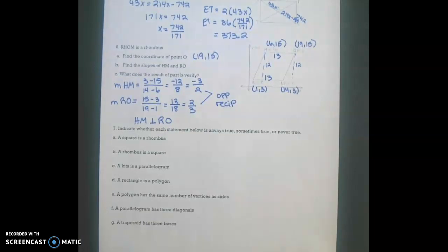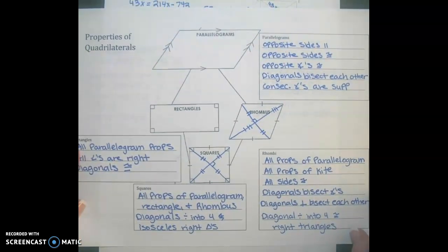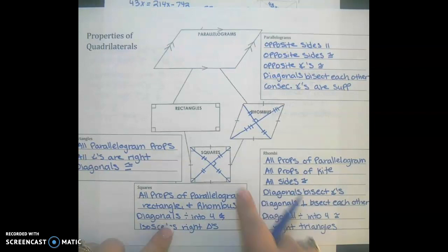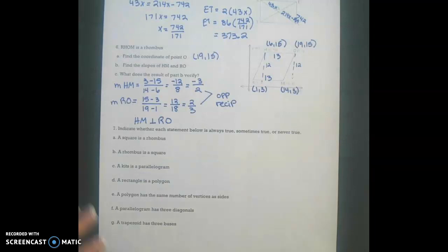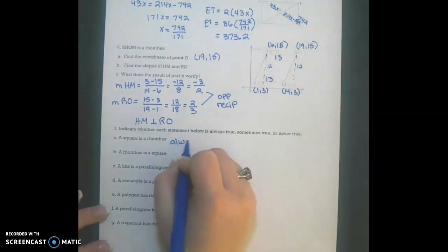Alright, now we're going to answer some sometimes, always, and never questions. So a square is a rhombus. Now if we look back at our properties, remember a square has all the properties of a rhombus. So that means a square is a rhombus. So this is always true.